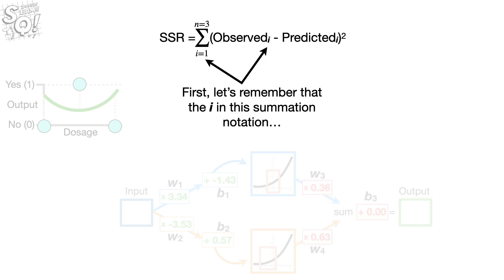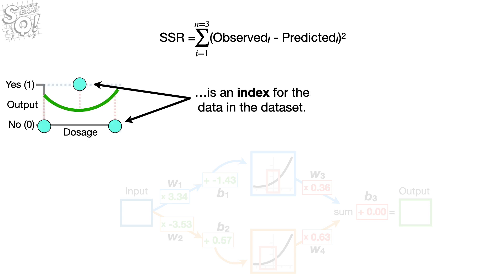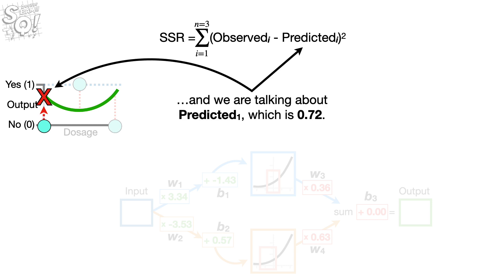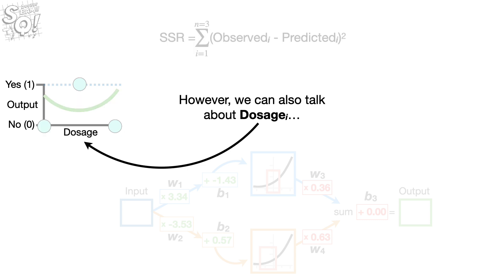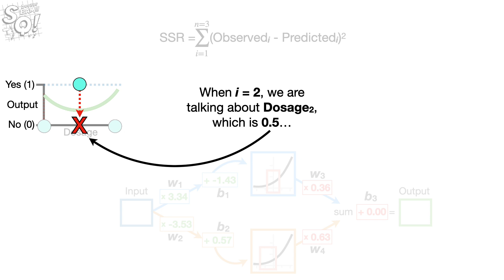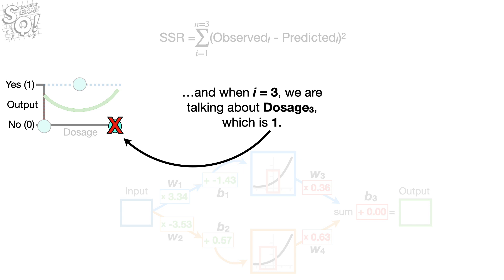First, let's remember that the i in the summation notation is an index for the data in the dataset. For example, when i equals 1, we are talking about observed sub 1, which is 0, and predicted sub 1, which is 0.72. We can also talk about dosage sub i: when i equals 1, dosage sub 1 is 0; when i equals 2, dosage sub 2 is 0.5; and when i equals 3, dosage sub 3 is 1.